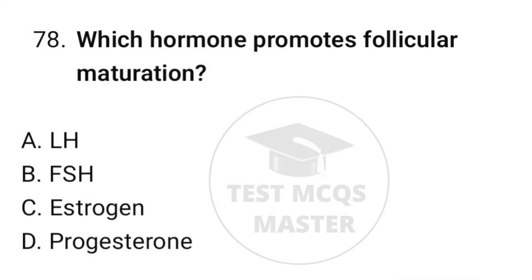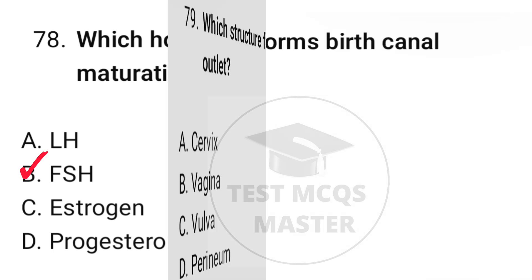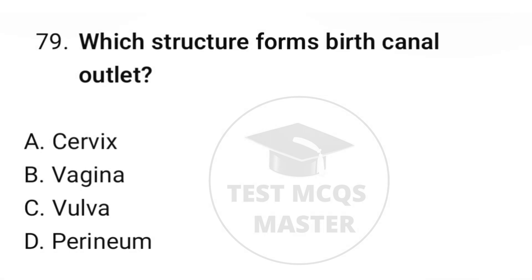Question number seventy-eight: which hormone promotes follicular maturation? The correct option is B, FSH. Question number seventy-nine: which structure forms the birth canal outlet? The correct option is B, vagina.